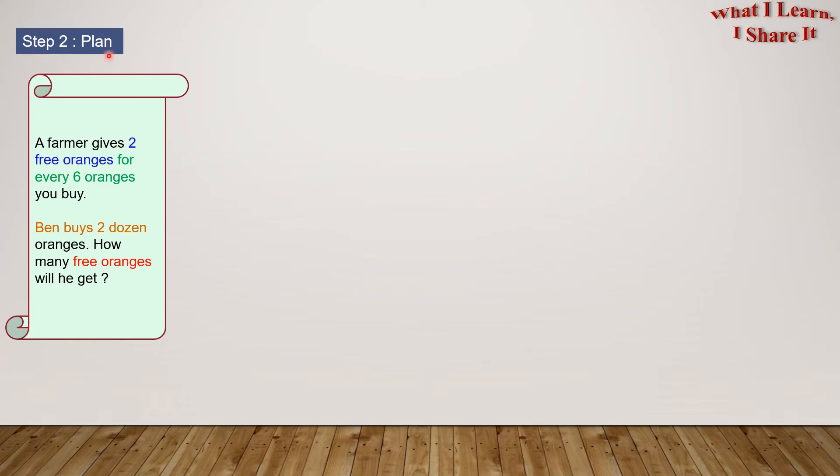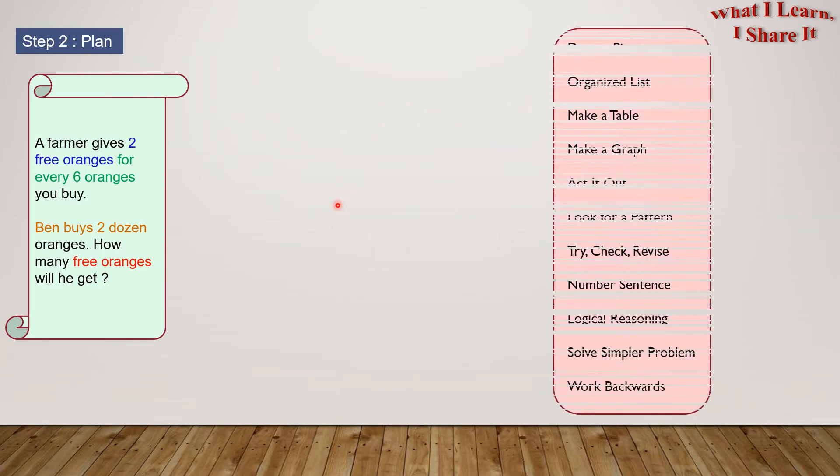Step 2. Plan. Now think about the strategies. Here are all the strategies that we've worked with before. I have made each individual video for them. So there's draw a picture, organized list, make a table, make a graph, act it out, look for a pattern, try, check, revise, number sentence, logical reasoning, solve simpler problem, and work backwards. I am going to use Make a table.